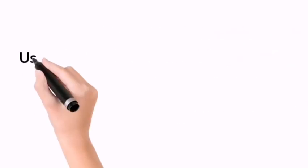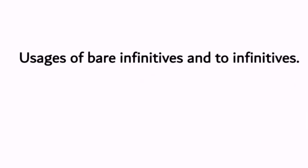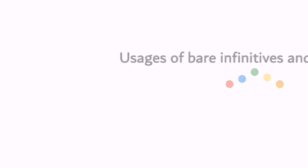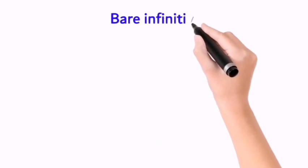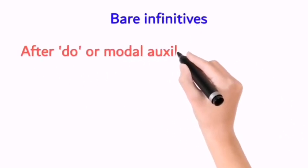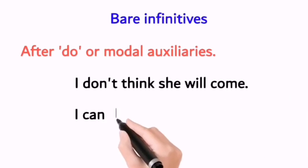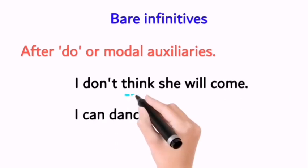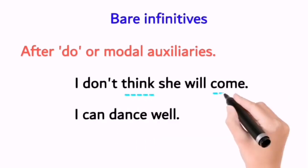Here are some usages of bare infinitives and to infinitives. Bare infinitives are used after 'do' or modal auxiliaries. Examples: I don't think she will come. I can dance well.